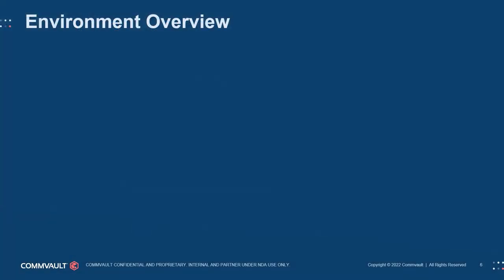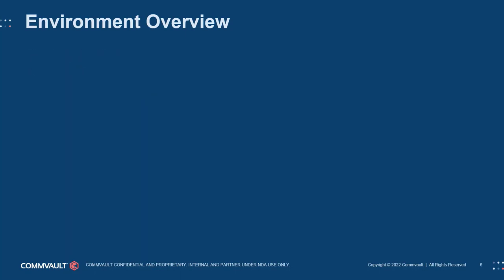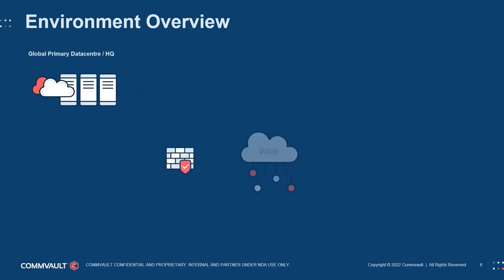Rather than asking a customer to describe their whole environment, begin your discovery with some simple, targeted questions. There really is no such thing as a typical environment, but let's look at an example — you'll then be able to follow a similar process regardless of the environment you are faced with. Start by asking the customer how many sites exist within their environment. In this case, a site would be any location where data needs to be protected, where protected data will reside, and where data needs to be accessed. In this example, we have an active or primary data center environment that hosts any kind of production workload — this could be a company headquarters, a rented data center, or even hosted with a service provider.